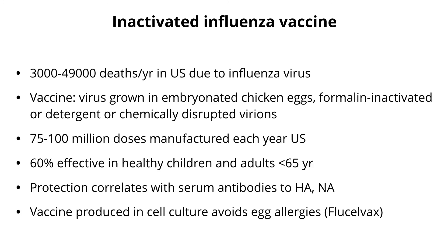In the U.S., we typically have anywhere from 3,000 to 49,000 deaths caused by influenza virus, typically in very young or very old people — so it's a lethal virus, and that's why we have a vaccine. The original flu vaccine was grown in embryonated chicken eggs, then taken out, inactivated with formalin or detergent, and injected into your arm. We manufacture about 100 million doses every year in the U.S. It's about 60% effective at preventing influenza — so out of 100 people who get the vaccine, 40 are still susceptible. In people over 65, it's even less effective and doesn't even last more than one season. Protection correlates with antibodies against the glycoproteins on the surface — the HA and the neuraminidase.